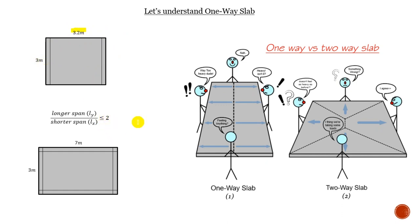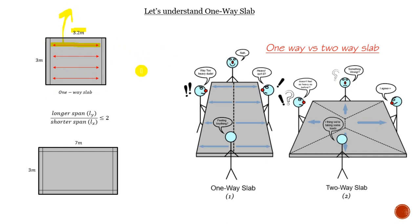What makes a one-way slab — if you see this panel, it's not supported by all of its sides, only two sides. Although you see 3.2 divided by 3 gives you something less than two, that does not make it a two-way slab. This makes it instantly a one-way slab, because we only have two supports. The load basically cannot go to emptiness. The other way to define a one-way slab is just as we said: the longer span divided by the shorter span gives you something more than two.